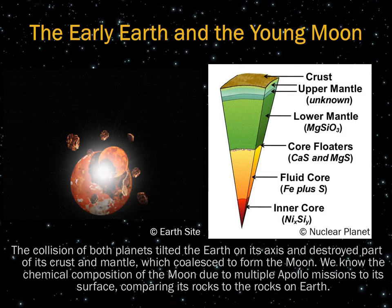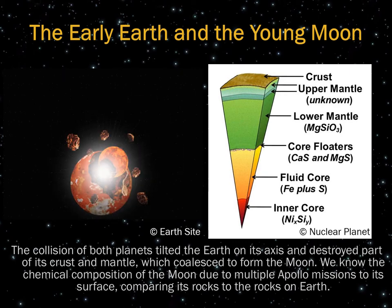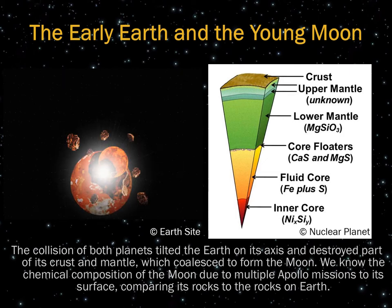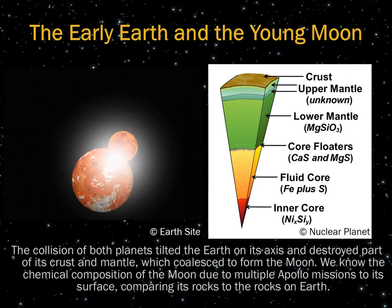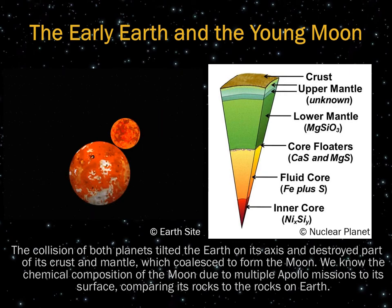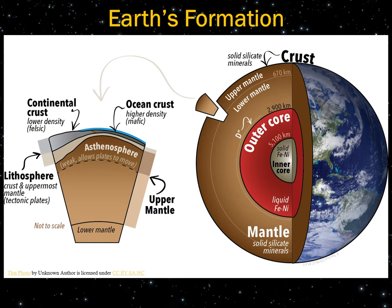The Moon has the same chemistry as the Earth's mantle and crust — primarily silicon and oxygen. There is no core material, no heavy metals or iron present. The Moon is made mostly of crustal and mantle material. The Moon is spherical because that material, as it condensed and collapsed to form a disk around the young Earth, eventually became a spherical shape due to gravity and its compressional force.